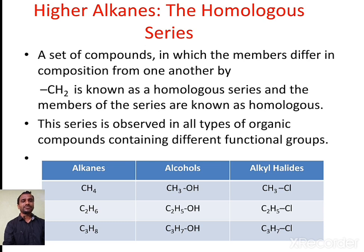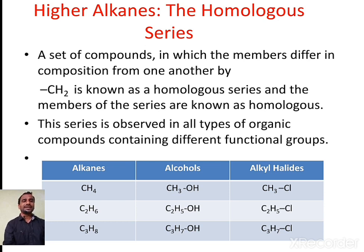The third column covers organic compounds called alkyl halides, consisting of methyl chloride, ethyl chloride, and propyl chloride. Methyl chloride and ethyl chloride are distinguished by the CH2 unit, and the same applies from ethyl chloride to propyl chloride. This is the homologous series for alkyl halides. All these homologous series share the unique character that consecutive members are differentiated by the CH2 unit.